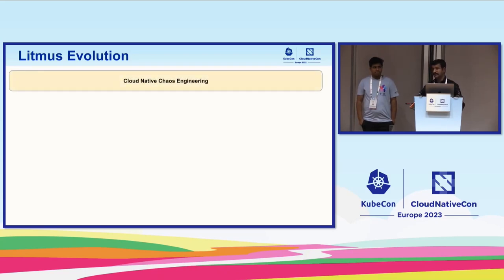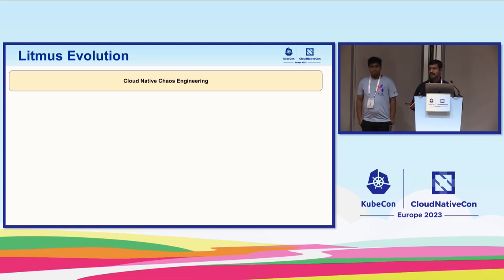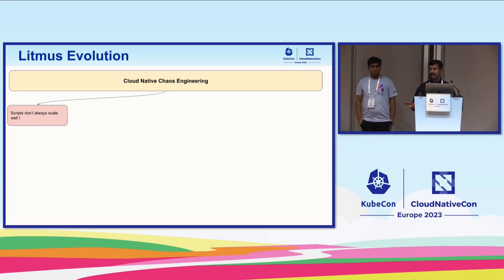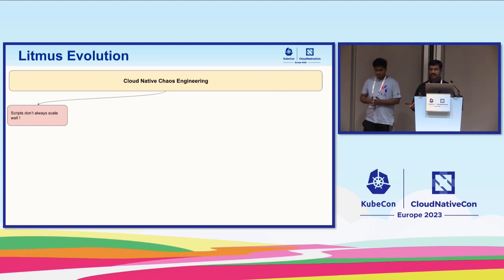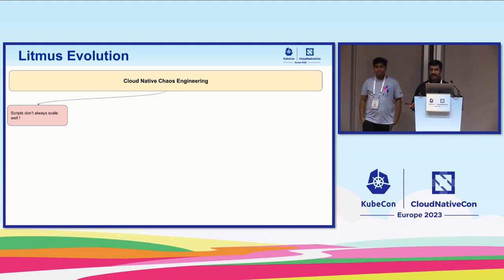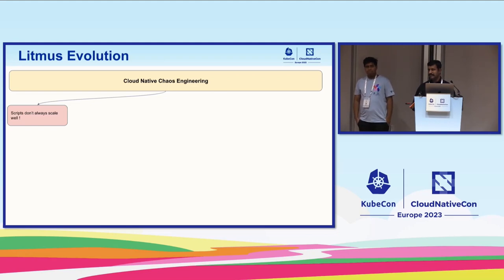Litmus has evolved from being a small set of tests — where you had a Kubernetes job to introduce some faults — all the way to what it is today: a complete infrastructure to think, design, implement, execute, and monitor chaos tests from an end-to-end basis. It's a complete platform. So we started with some Kubernetes jobs in 2017-18, then we wanted to make sure we provide the opportunity to write chaos tests as you write any other YAML file for Kubernetes — make it completely declarative.